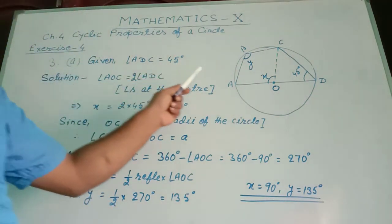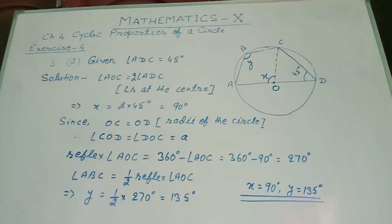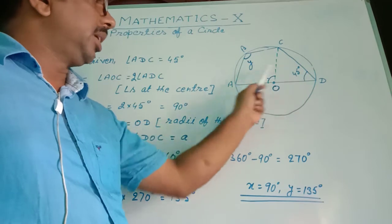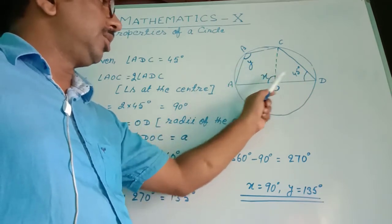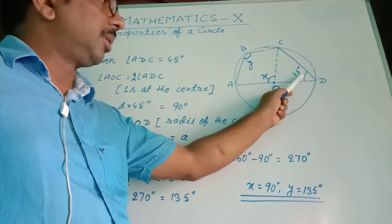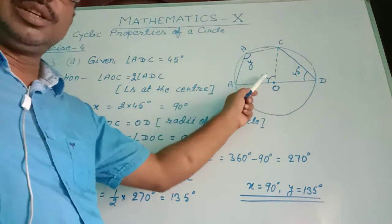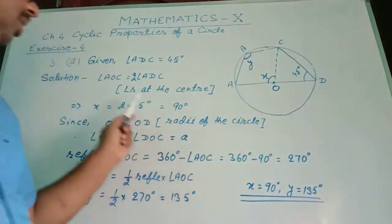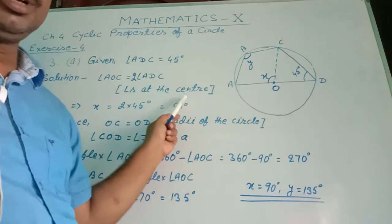The given information states angle ADC equals 45 degrees. Angle ADC is the angle at the circumference and angle AOC is the angle at the center. From the theorem, the angle at the center is twice the angle at the circumference. Therefore, angle AOC equals twice angle ADC.